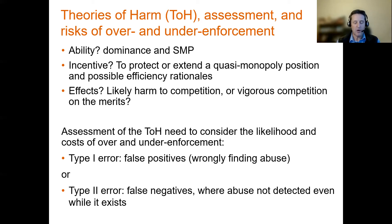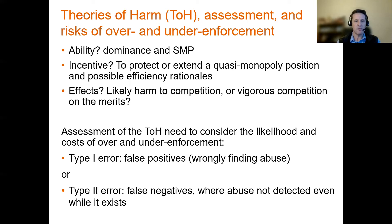We can think about applying these tests in terms of whether there's a type one or a type two error. Are we applying the test in a way that may wrongly find abuse when it hasn't actually occurred and it's just competition on the merits? Or are we applying the test in ways where abusive conduct is actually happening but we are not detecting it — a false negative where we should be detecting that conduct? We need to think about the economic frameworks and how we apply them in terms of whether they are erring on one side or the other.